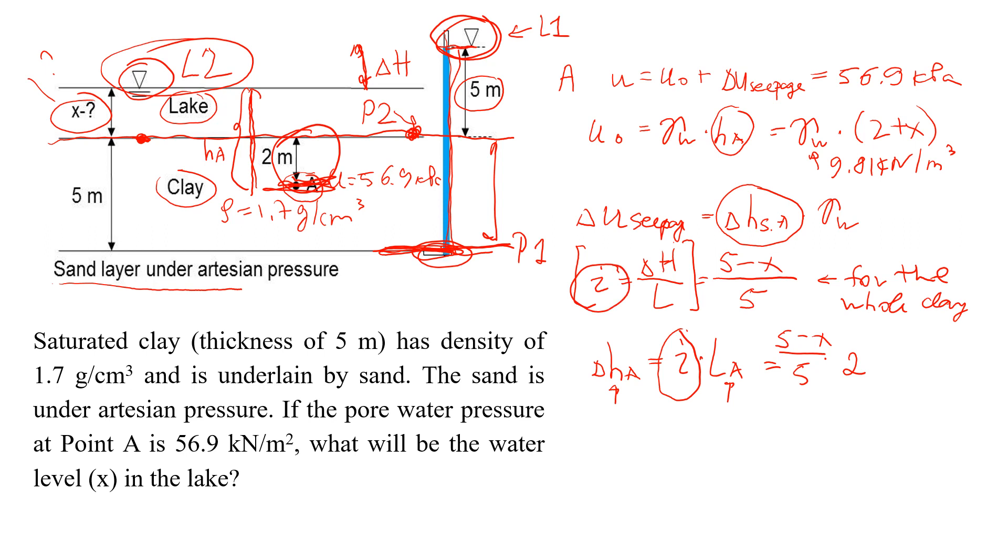And when we change it to this additional pore pressure that comes from seepage, we need to multiply this by unit weight of water. So I can write this 5 minus x divided by 5 times 2 times 9.81, because 9.81 is the unit weight of water.